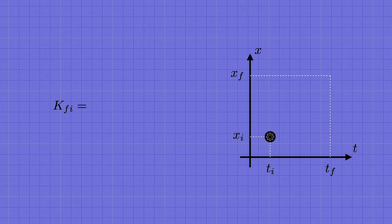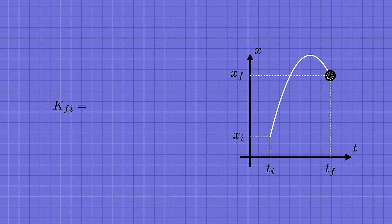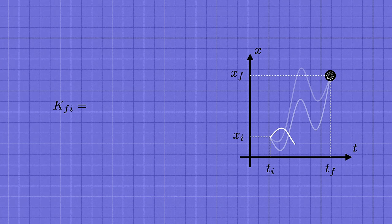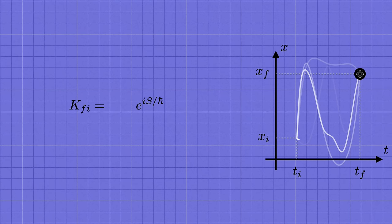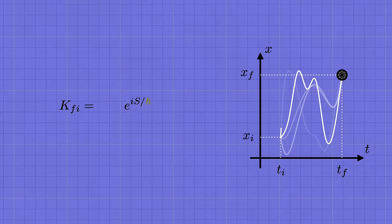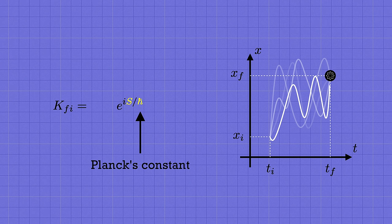And here's Feynman's path integral prescription for computing k. Again, classically, the particle would follow a single unique trajectory between these points. But in quantum mechanics, Feynman discovered that we need to consider every possible trajectory that passes between them. Each of those possible paths contributes with a particular weight, which is written as e to the i times s over h-bar. H-bar is Planck's constant, which is the fundamental physical constant of quantum mechanics. And s is a certain number that's associated to each trajectory, called its action.